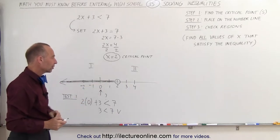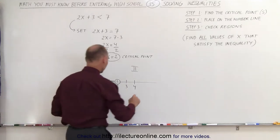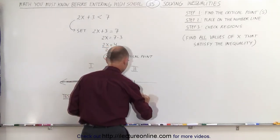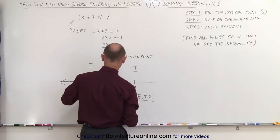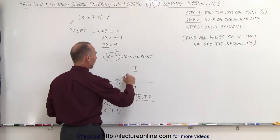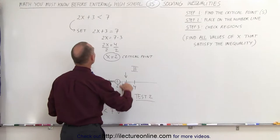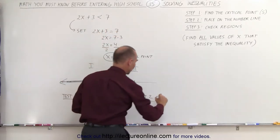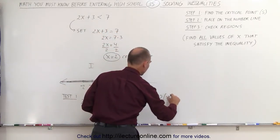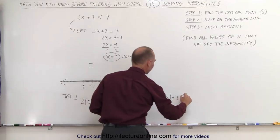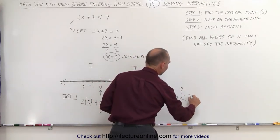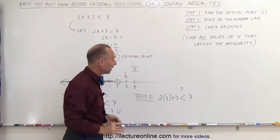Now let's try a point from the other side. So we're going to check test number 2. And here we're going to plug in another value. Let's say the value of number 3. Let's plug in 3 for x and see what we get. So 2 times 3 plus 3, is that less than 7?